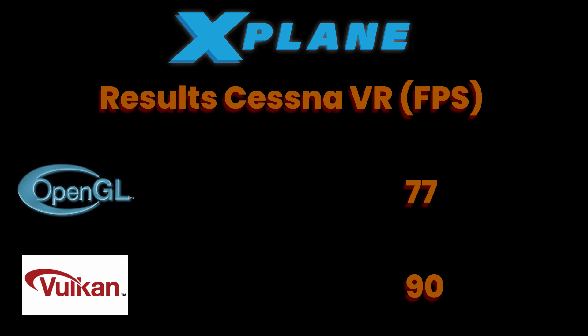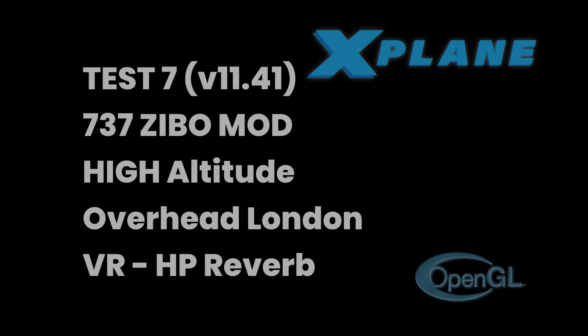OpenGL 77 on average and Vulkan a maximum at 90 FPS. Quite a substantial jump in Vulkan for VR.